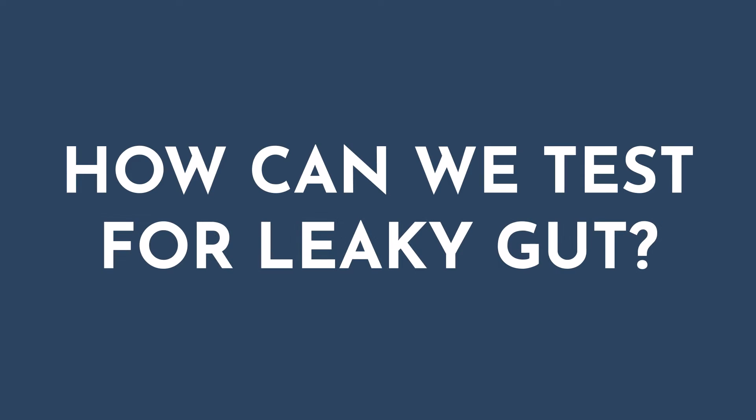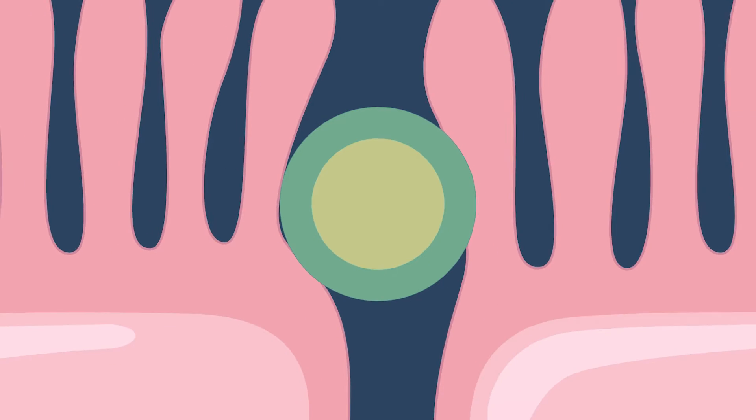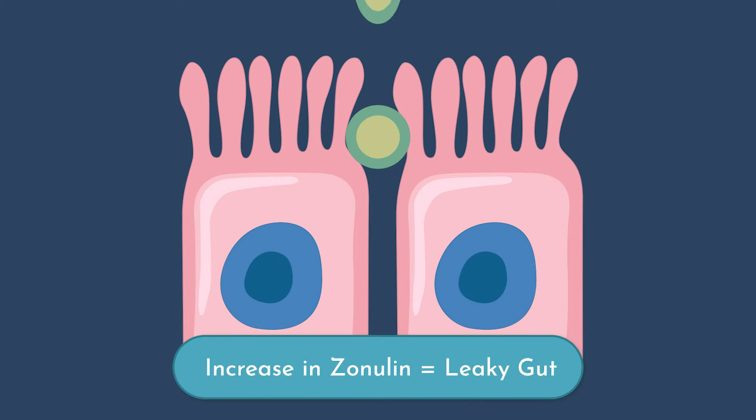So how can we test for leaky gut? It's important to recognize that there is not one validated test for leaky gut at this point. However, there are several tests that can be extremely valuable in looking at the possibility of leaky gut and how that correlates with your or your patient's clinical symptoms. One key way to look at this is through zonulin testing. This can be a standalone test through Diagnostic Solutions, or it can be part of a comprehensive GI map test. Zonulin is the protein that holds the tight junctions together in the gut, so when we have an increase in zonulin, that is indicative of a potential leaky gut.